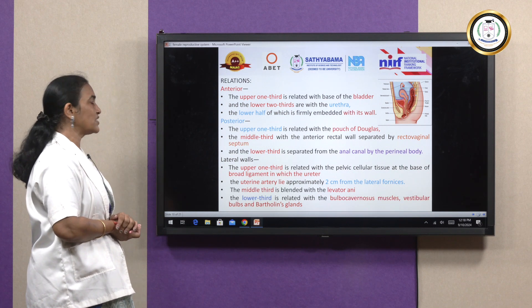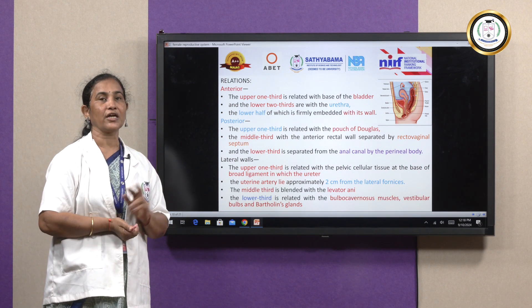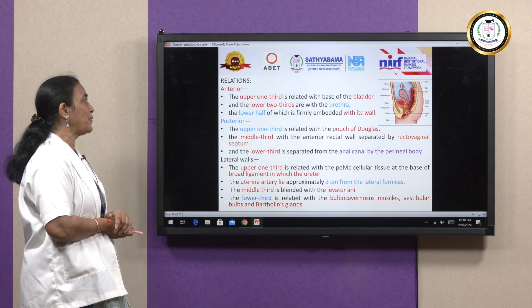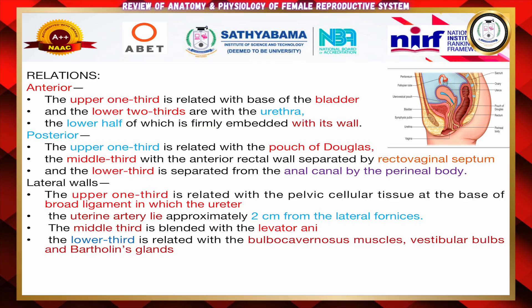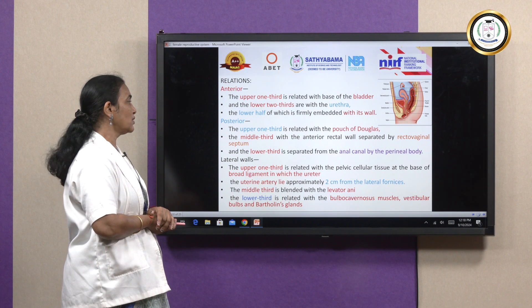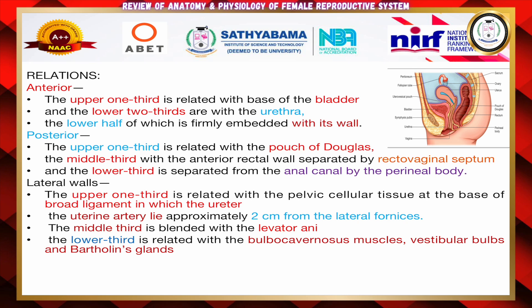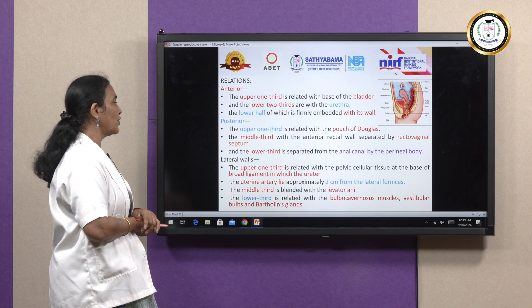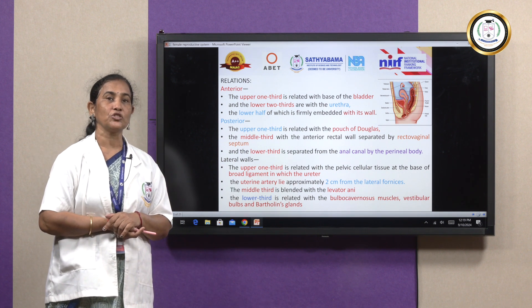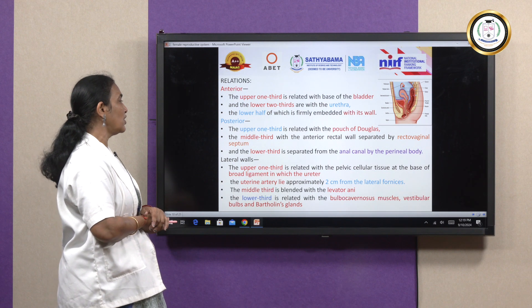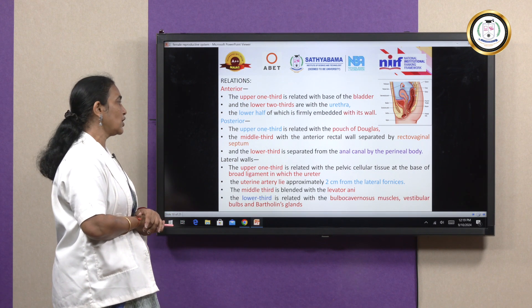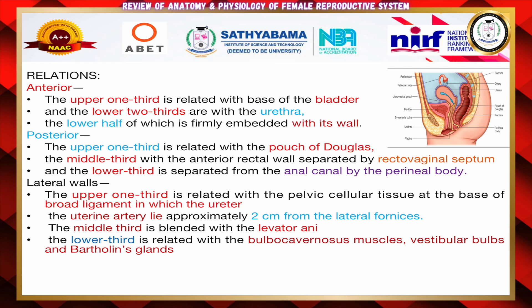The middle one-third posteriorly is the rectovaginal septum — that is a septum separating the rectum and vagina. The lower third is separated by the anal canal by the perineal body. Laterally, the upper one-third is attached to the base of the broad ligament, with the uterine arteries lying two centimetres from the lateral fornices. The middle third is blended with the levator ani, and the lower third is related to the bulbocavernosus muscles, vestibular bulbs, and Bartholin glands.